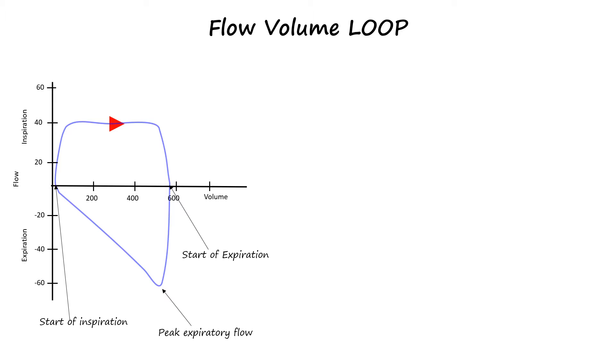Flow is plotted on the y-axis representing the rate of airflow into and out of the lungs, while volume is plotted on the x-axis representing the amount of air in the lungs.